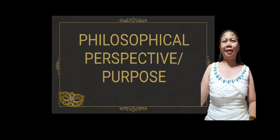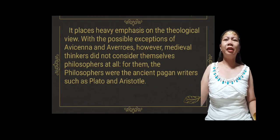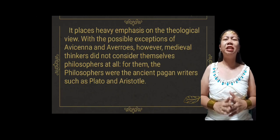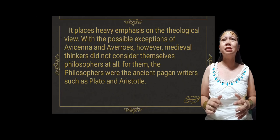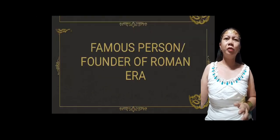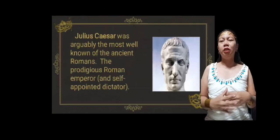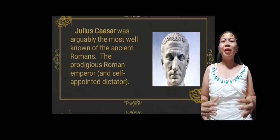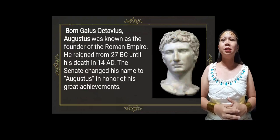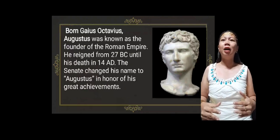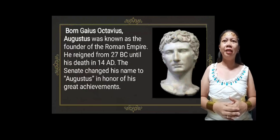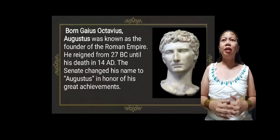The philosophical perspective or purpose of Roman art places heavy emphasis on the theological view, with possible exceptions of Avicenna and Averroes. However, medieval thinkers did not consider themselves philosophers at all — for them, the philosophers were the ancient pagan writers such as Plato and Aristotle. The famous person of the Roman era was Julius Caesar, arguably the most well-known of the ancient Romans and a prodigious Roman emperor and self-appointed dictator. The founder of the Roman era was born Gaius Octavius, also known as Augustus, founder of the Roman Empire. He reigned from 27 BC until his death in 14 AD, and later changed his name to Augustus in honor of his great achievements.